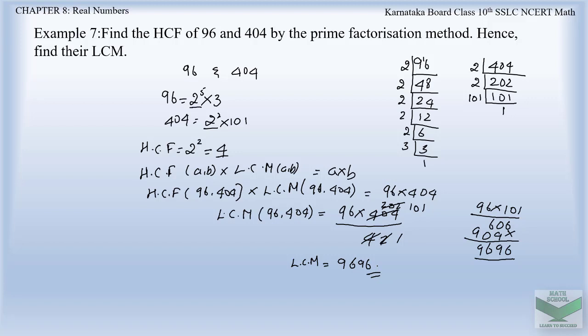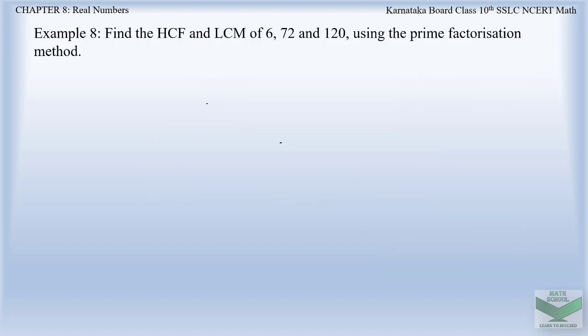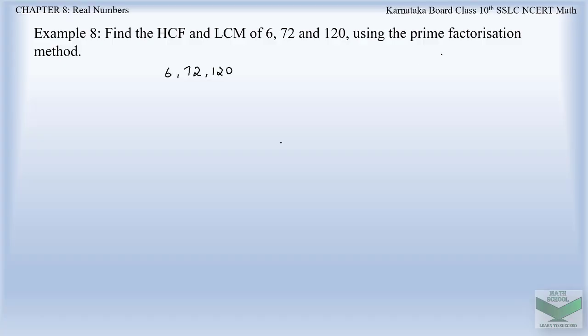Now coming to the next example problem. Find the HCF and LCM of 6, 72, and 120 using the prime factorization method. So let us factorize these numbers. First, factorizing 6: 2 threes are 6, 3 ones are 3. Now factorizing 72, which is divisible by 2.